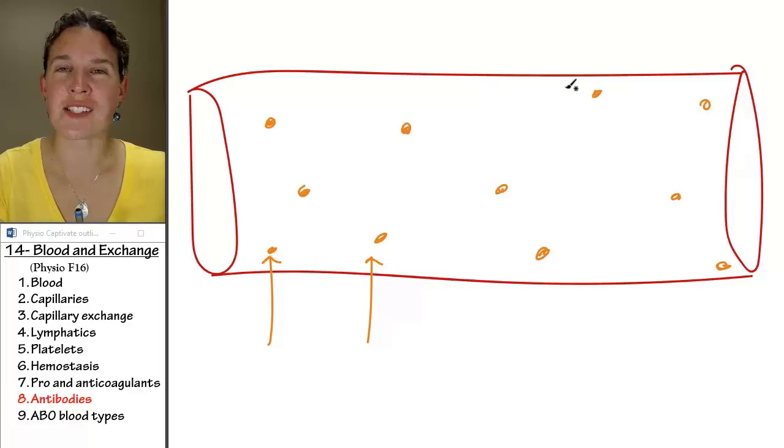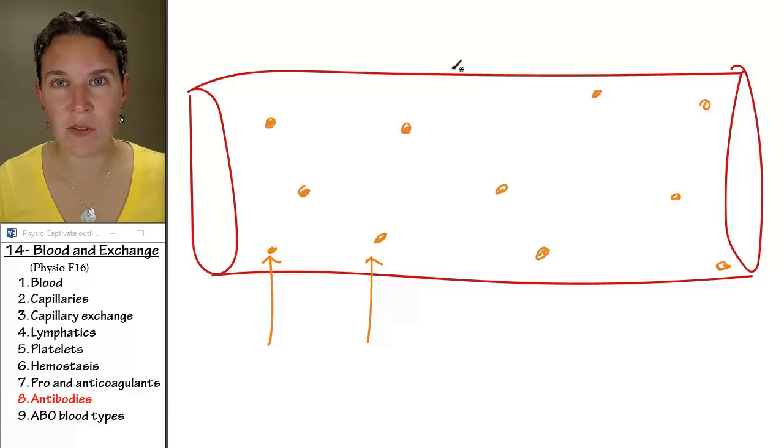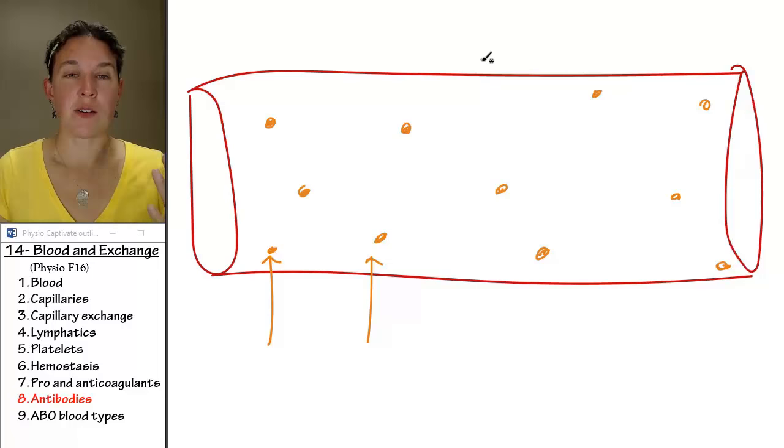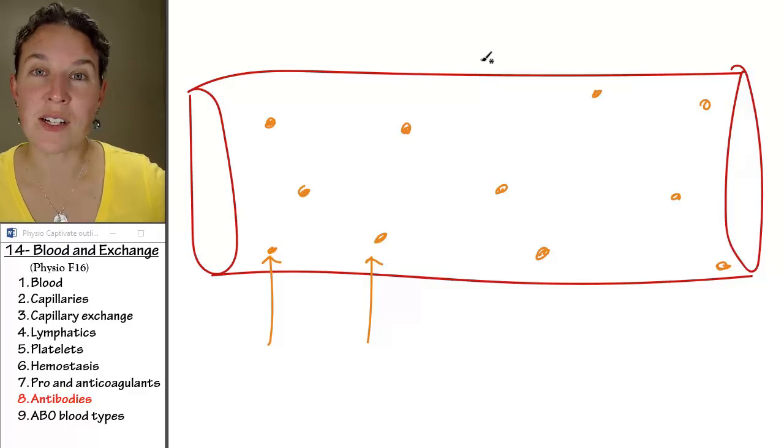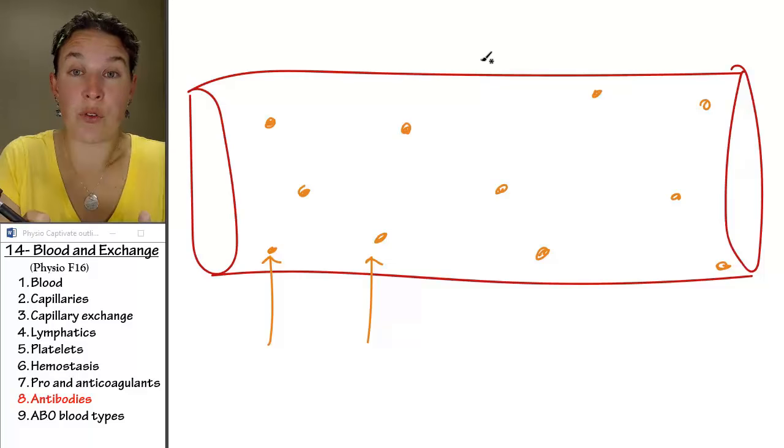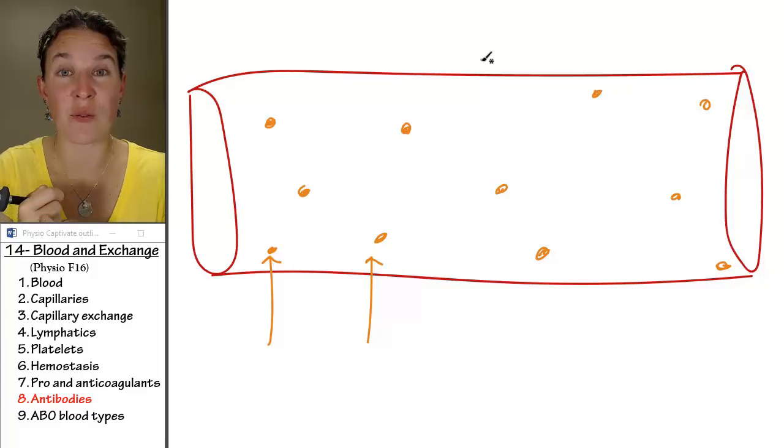Think about the process we just talked about. Think about hemostasis. Are there any plasma proteins involved there? All those agents and inactivated, the liver is producing fibrinogen and prothrombin, and those are both important to clotting, and they're plasma proteins floating around in your system.